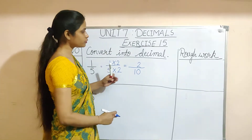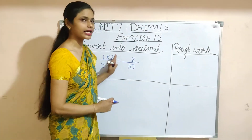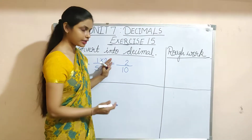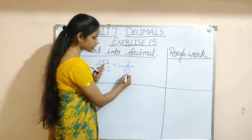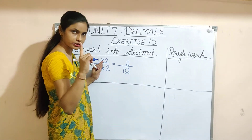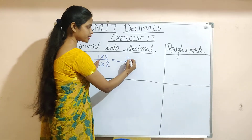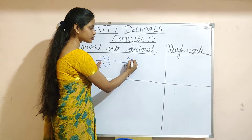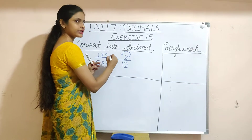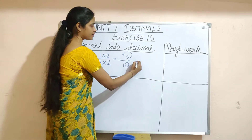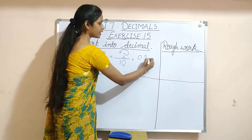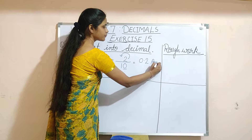So if we are multiplying the denominator by 2, we have to multiply the numerator also by 2. So we will get 2 in the numerator. So, 1 by 5 can be written as 2 by 10 in terms of decimal fraction. Now if you see 2 by 10, the number of zeros present in the denominator is one, so the decimal number will shift one place to the left hand side and this will become 0.2. This is the answer.